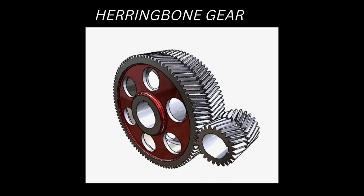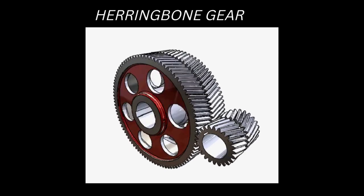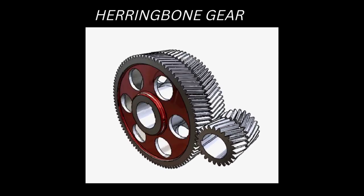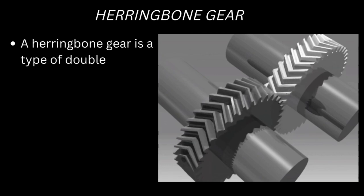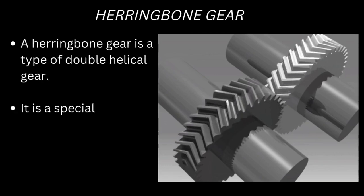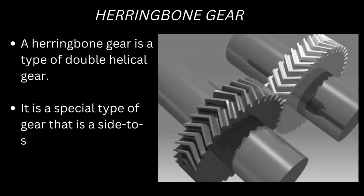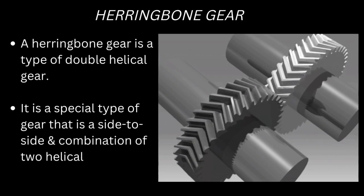Herringbone gears are a type of double helical gear. They are a special type of gear that is a side-by-side combination of two helical gears of opposite hands.